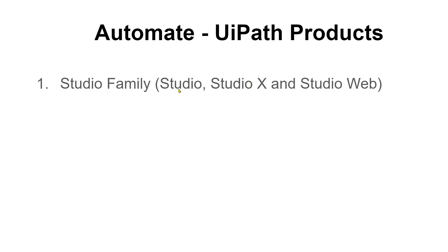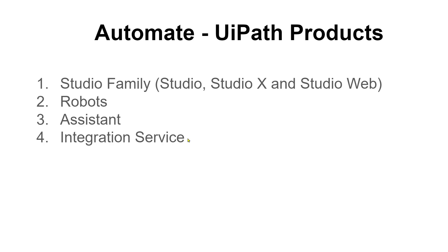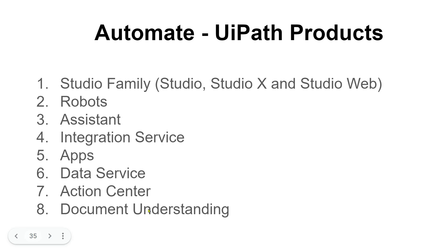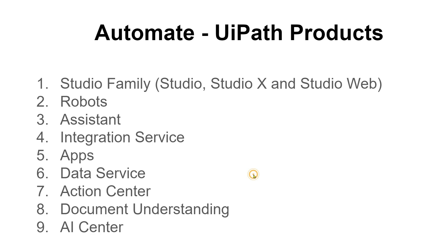The next set of products is called Automate. In Automate you have Studio family, which includes Studio, Studio X, and Studio Web. Then there are Robots, Assistant, Integration Service, UiPath Apps, Data Service, Action Center, and Document Understanding. Make a note of all these products.